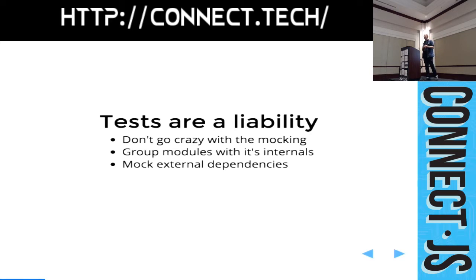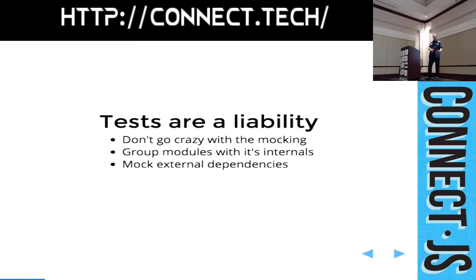Tests are a liability as much as they help us. At Facebook, we built Jest — a testing framework that auto-mocks everything you require. Anything you require in your app is automatically instantiated with mocked methods, and that's what gets passed to your app. But what ends up happening is you have to mock every single thing, and that becomes a real pain — a liability. You move a lot slower because of these tests. Every time you want to change something internal, you end up having to change all the mocks and tests you've already written.